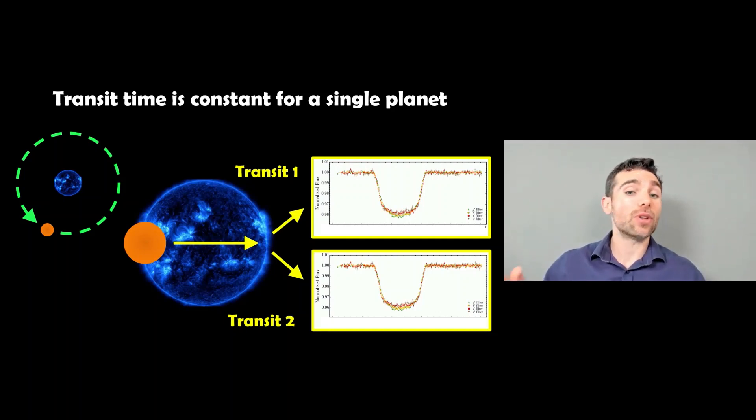Also, if it's a single planet in that system, that transit will occur at the same time period between each one. You wait some period of time, it comes back around again, you get another transit, and that always stays the same because you've got a single planet orbiting the star.